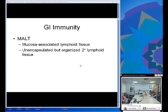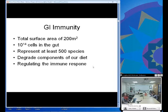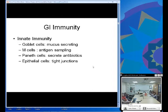MALT is mucosa-associated lymphoid tissue. It's unencapsulated, unlike lymph nodes, but organized in a similar fashion. The total surface area in the GI tract is 200 square meters, consisting of 10 to the 14th cells in the gut - these are human cells. There's at least that many bacteria cells as well. It represents at least 500 different species and degrades components of our diets and regulates the immune system.